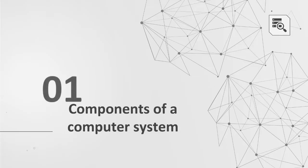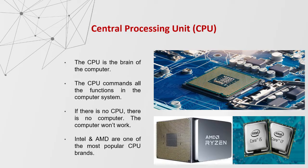Components of a computer system. The central processing unit, CPU, is the brain of the computer. The CPU commands all of the functions in the computer system. If there is no CPU, there is no computer — the computer won't work without it. Intel and AMD are one of the most popular CPU brands.